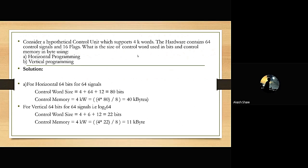For horizontal programming: control word size = 4 + 64 + 12 = 80 bits. Control memory = 4K words = 4 × 80 ÷ 8 = 40K bytes. For vertical programming, the control word size calculation follows similarly.